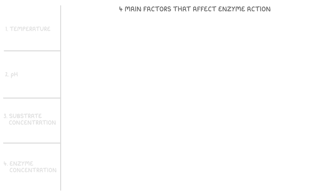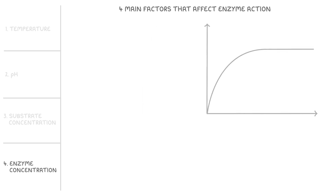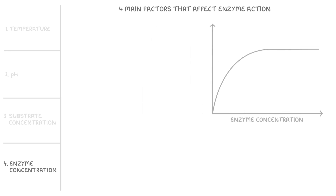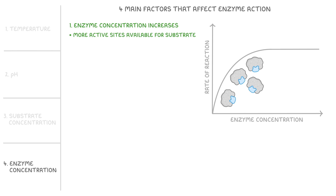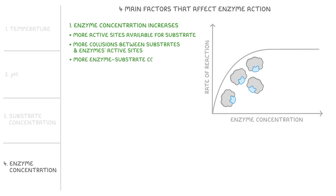To wrap up, let's go over how enzyme concentration affects these reactions, using a graph of enzyme concentration against the rate of reaction. As enzyme concentration increases, there are more active sites available for the substrate molecules to bind to. As a result, there are more collisions between substrates and the enzyme's active sites, more enzyme-substrate complexes form, more products form over time, and so the rate of reaction increases, as shown by this region on our graph.